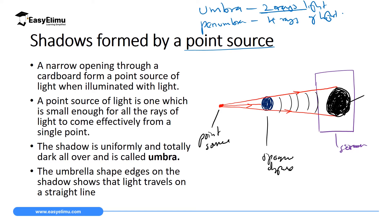The formation of this umbra is a proof that light travels in a straight line. Because if light was not traveling in a straight line, it means it would reach the opaque object, pass it, and then change direction to cover the dark space behind it. But since light has not done that, it means it can only travel in a straight line. If there is an opaque object, it cannot change direction to cover the dark space behind it where there is no light. So the formation of umbra shadow is a proof that light travels in a straight line.